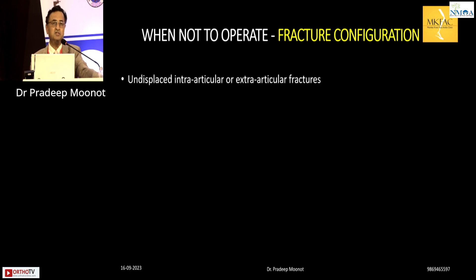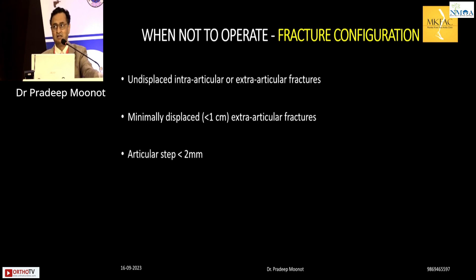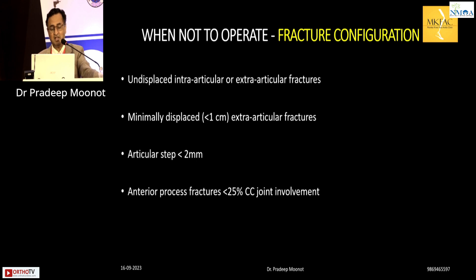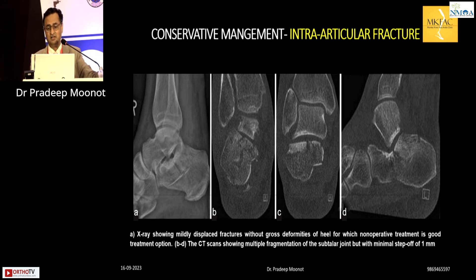Certain fracture configurations do not require surgery: undisplaced intra-articular or extra-articular fractures, minimally displaced extra-articular fractures with minimal articular step, and comminuted fractures with no articular step. Anterior process fractures with less than 25% calcaneo-cuboid joint involvement can be managed conservatively. For example, a fracture that appears comminuted but has no significant varus/valgus and a well-preserved posterior facet should be treated conservatively.